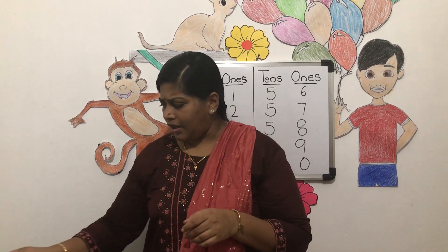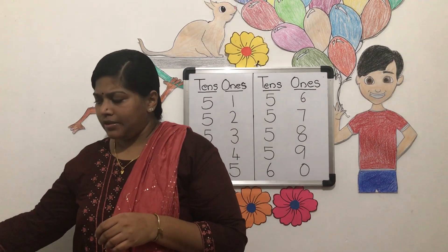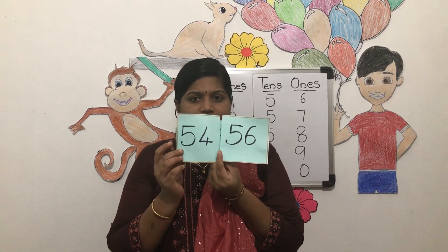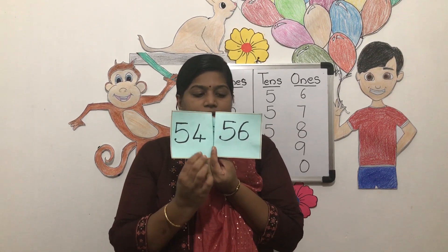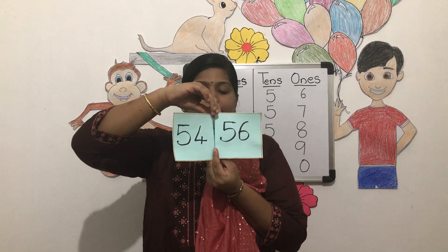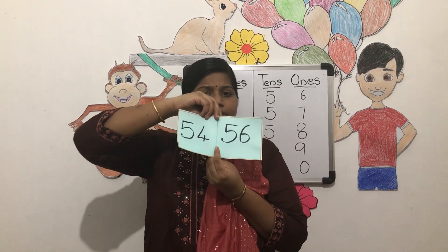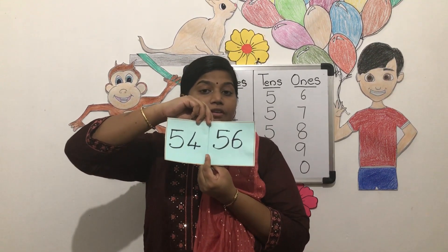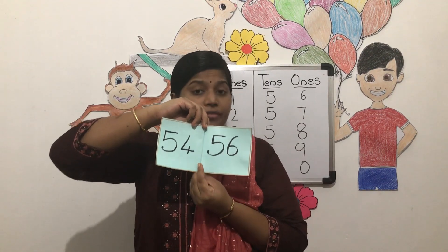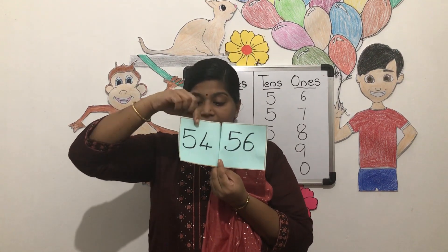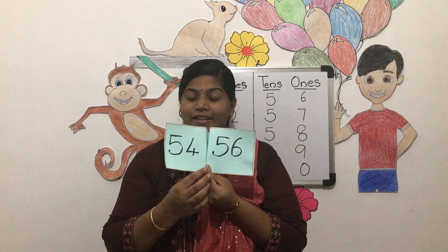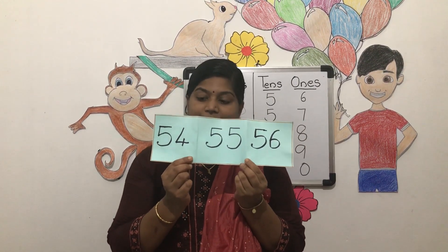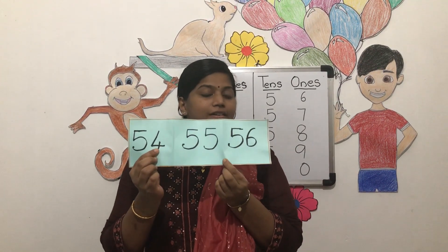Now let me ask a between number. I have two numbers here — 54 and 56. Between these numbers, one number is missing. Can you tell me what that is? Let's count from 51: 51, 52, 53, 54 — after 54 there should be one number — 55, then 56. Correct? 54, 55, 56.